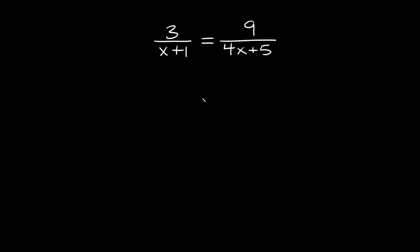To solve this type of rational equation you just have to cross-multiply. So the first cross right here we have 9 times x plus 1.